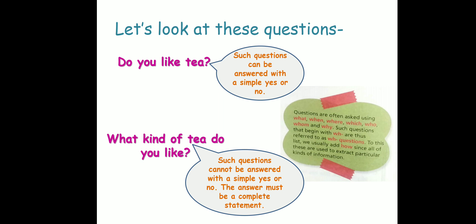This is taken from your book. Questions are often asked using what, when, where, which, who, whom, and why. Such questions begin with 'wh' — see all of the spellings start with wh — and are thus referred to as WH questions. To this list we usually add 'how.' How does not exactly use wh in that sequence, but since there is a W and an H in the spelling of 'how,' we add it to this list as well. All of these questions extract or ask for some kind of information. So this chapter is all about forming questions.